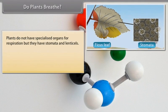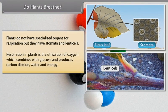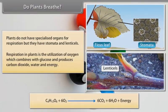Plants do not have specialized organs for respiration, but they have stomata and lenticels. Respiration in plants is the utilization of oxygen which combines with glucose and produces carbon dioxide, water, and energy. The combustion of glucose gives carbon dioxide, water, and energy.